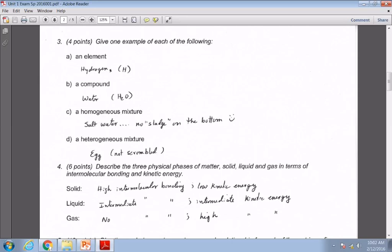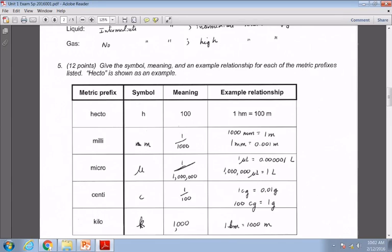This metric system down here, probably the one that most people missed, if you were going to miss it, was this one, this micro. Okay, micro is one millionth of. And the symbol we call this is mu, M-U, I think, the Greek letter mu.